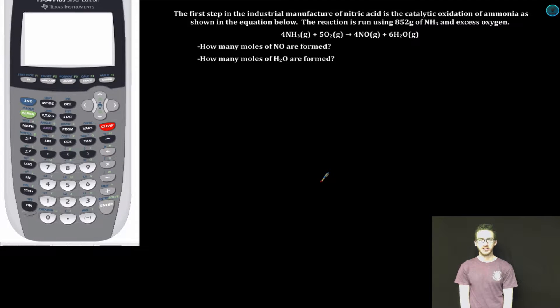Who is ready to crank it up a notch? The first step in the industrial manufacture of nitric acid is the catalytic oxidation of ammonia as shown in the equation below.